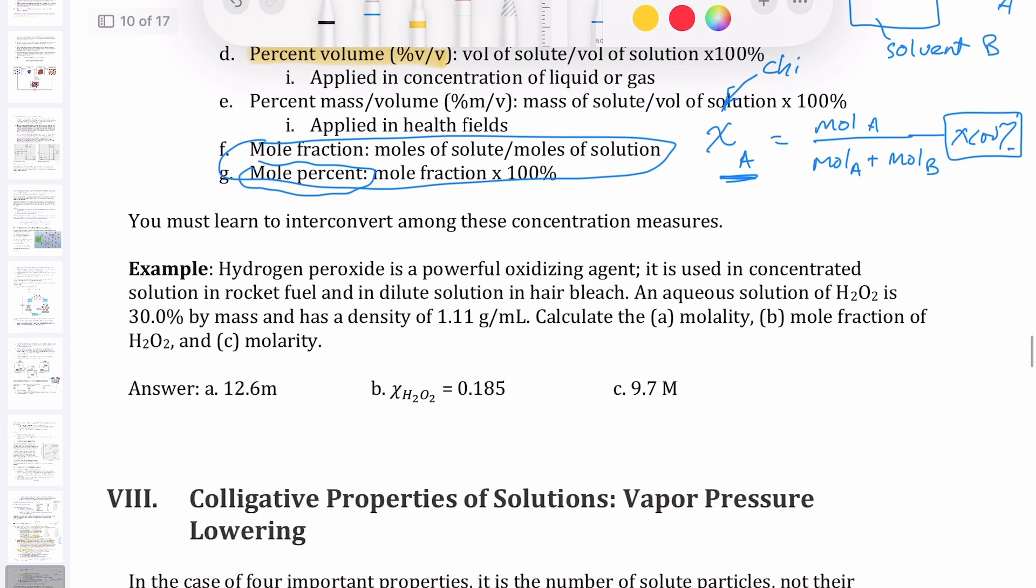The key here is to know how to interchange between these measures of concentrations. The reason is because when we do experiments, sometimes it's more convenient to use one measure, but then you need to perhaps convert it to some other measure if you're trying to measure some other property.